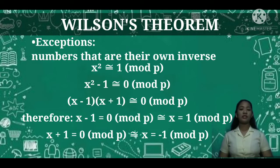Therefore, x - 1 ≅ 0 (mod p) gives x ≅ 1 (mod p), or x + 1 ≅ 0 (mod p) gives x ≅ -1 (mod p).